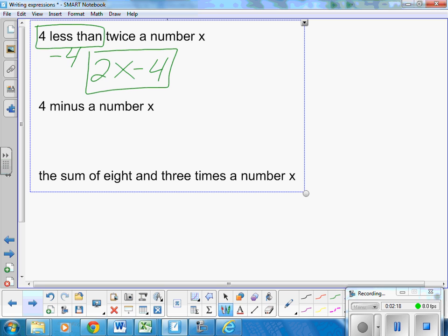4 minus a number x. Minus is subtract. So that is the same as 4 minus subtract x. 4 minus x. Khan should take it this way. If they don't take it the way that is, raise your hand, ask me, and I'll clarify.